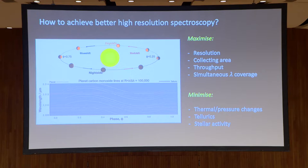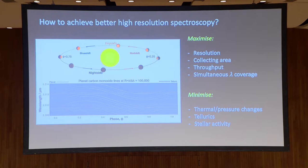In the future, how do we get better results on more interesting planets? To get better high resolution spectroscopy, you need to maximize resolution, collecting area — bigger telescope means more photons and better signal-to-noise — throughput, and simultaneous wavelength coverage. Wider wavelength coverage gives you a better ability to identify atoms and molecules, and also to disentangle stellar activity. Having a wider leverage arm over wavelength coverage lets you disentangle the planet's signal better. You want to minimize thermal and pressure changes, tellurics, and stellar activity.